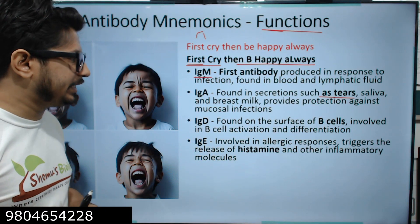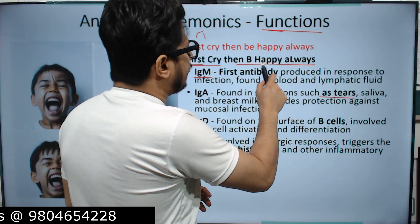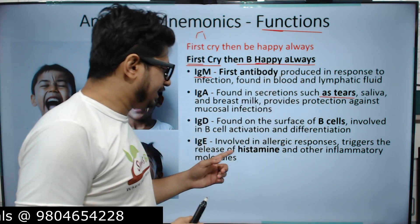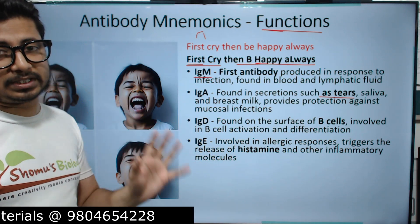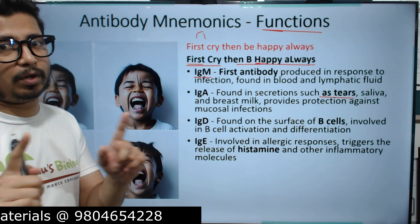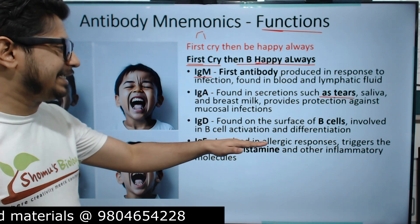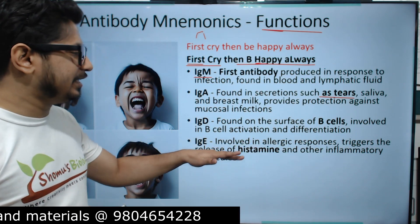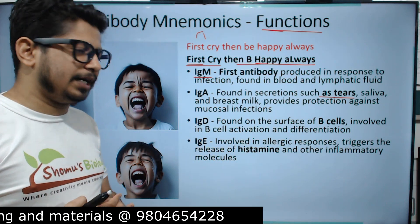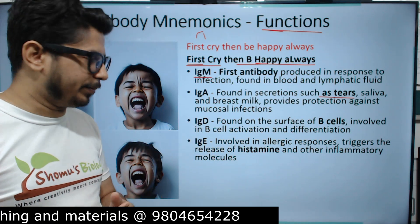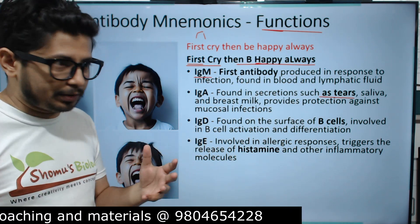Next is E — immunoglobulin E. Its job corresponds to 'happy' — H for histamine. Although if you have more histamine in the body you will not be happy because you'll have hives. IgE is involved in the allergic response; it triggers the release of histamine, which causes inflammatory responses and production of inflammatory molecules in the body.